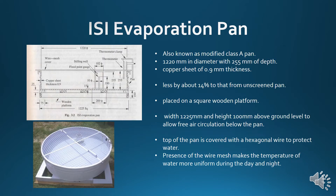The ISI evaporation pan, also known as the modified Class A pan, consists of a pan 1,220 mm in diameter and 255 mm in depth. The pan is made of copper sheet of 0.9 mm thickness, tinned inside and painted white outside. The evaporation from this pan is found to be less by about 14% compared to an unscreened pan. It is placed on a square wooden platform of width 1,225 mm and height 100 mm above ground level to allow free air circulation. The top of the pan is covered with a hexagonal wire net of GI to protect water from birds, and the wire mesh makes the temperature of the water more uniform during day and night.